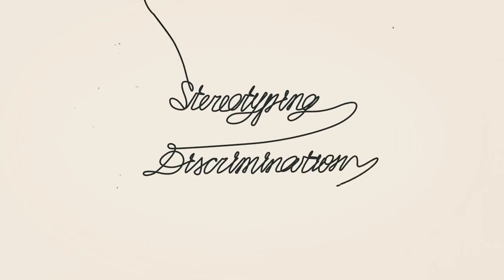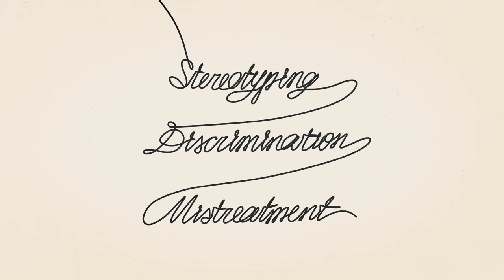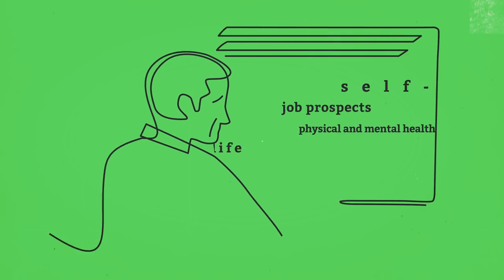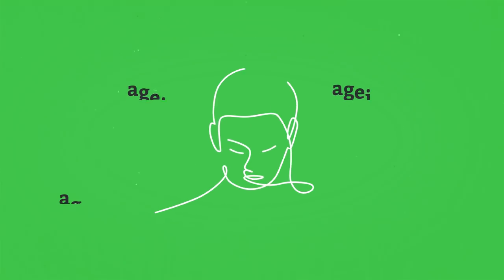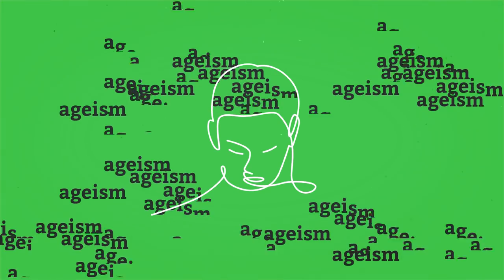Ageism against older people is stereotyping, discrimination and mistreatment based solely on a person's age. It affects people in many ways and is so common and accepted, most of the time we don't even notice it.